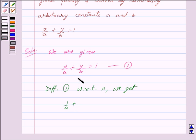(1/B) dy/dx = 0, since differentiating the constant 1 with respect to x gives 0.